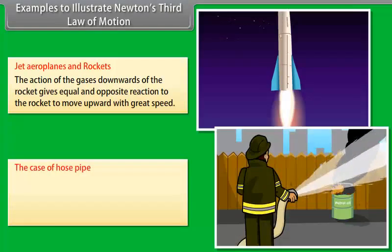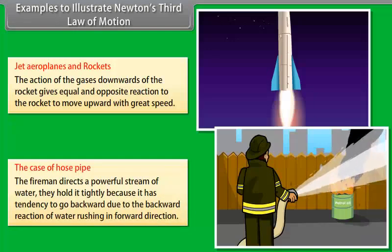The case of hose pipe: The fireman directs a powerful stream of water. They hold it tightly because it has tendency to go backward due to the backward reaction of water rushing in forward direction.